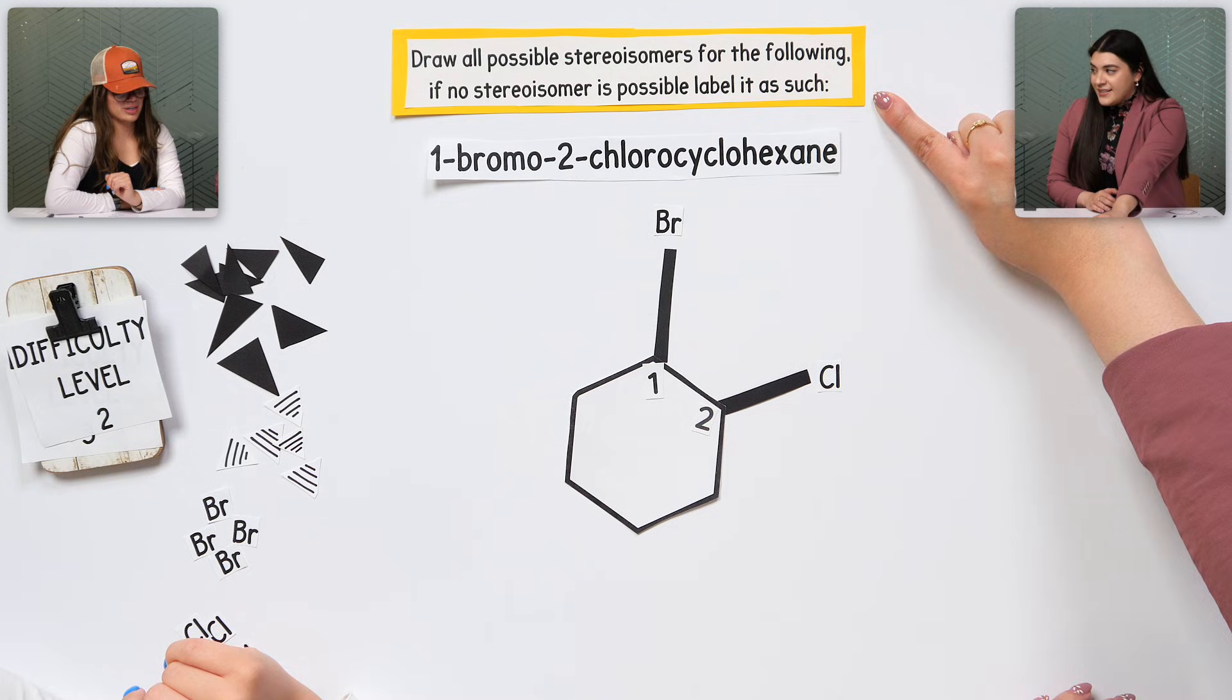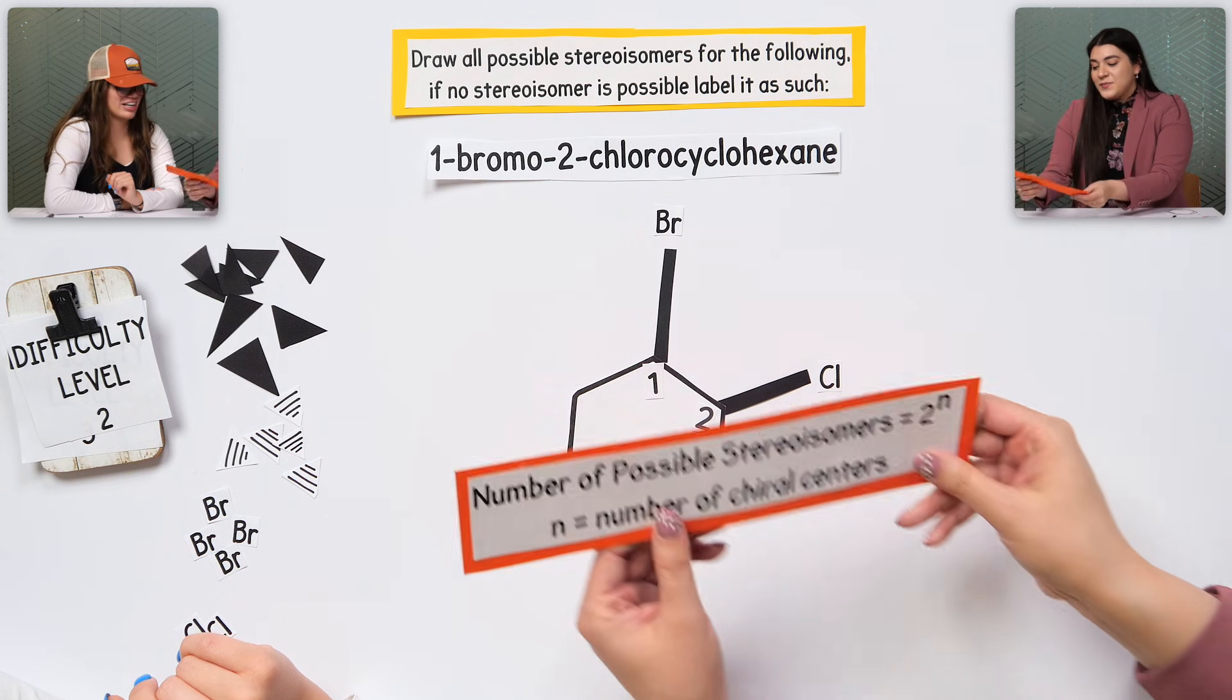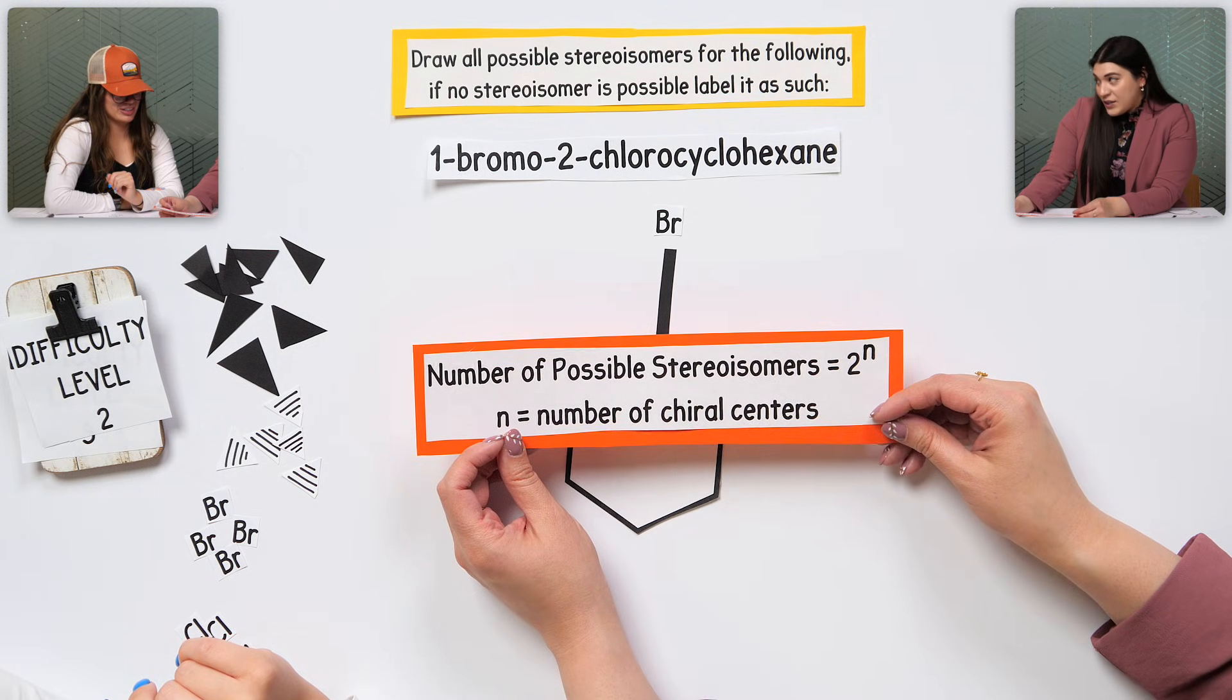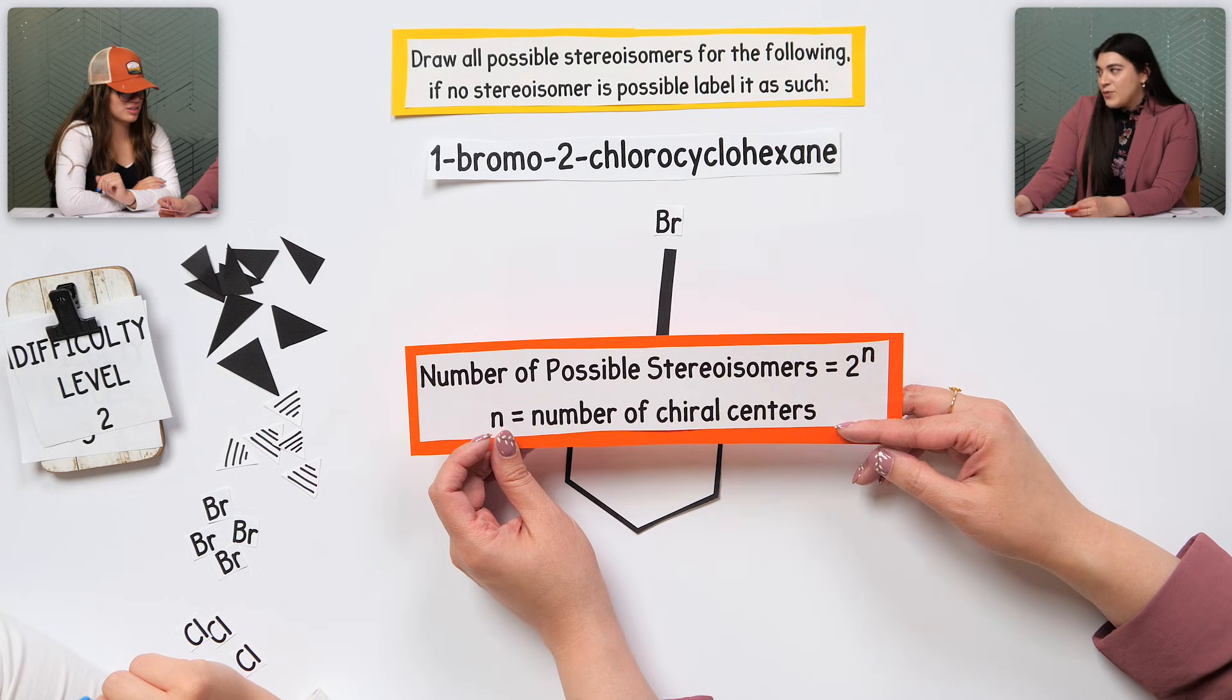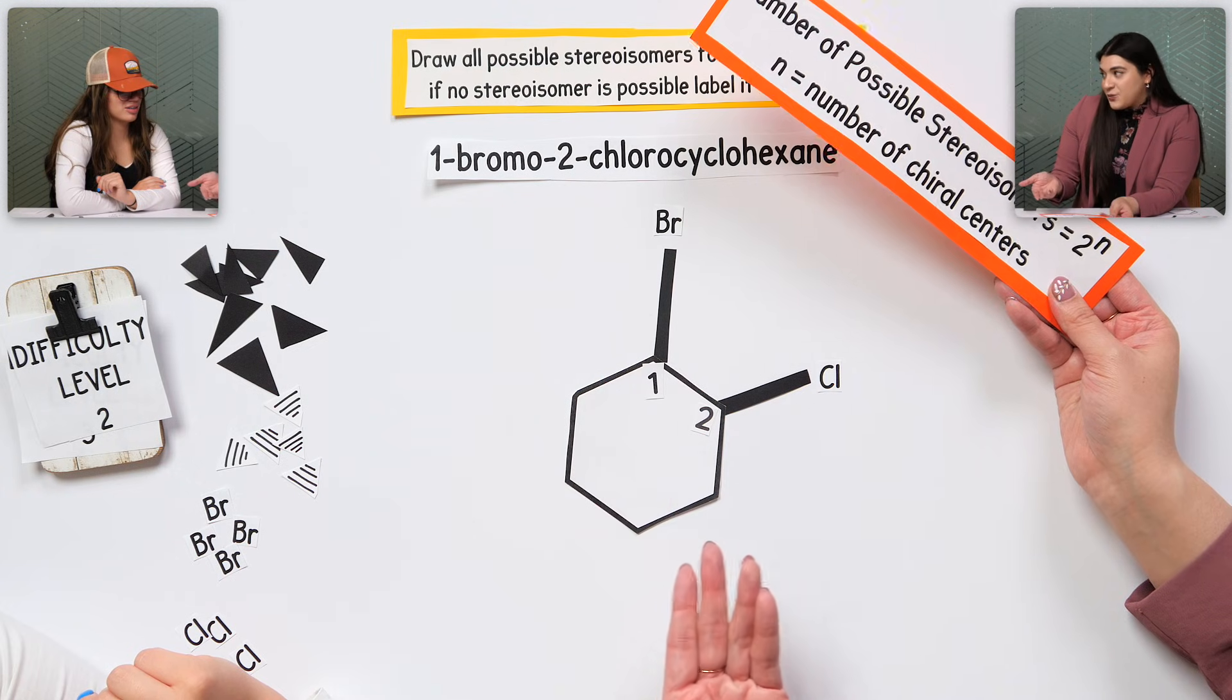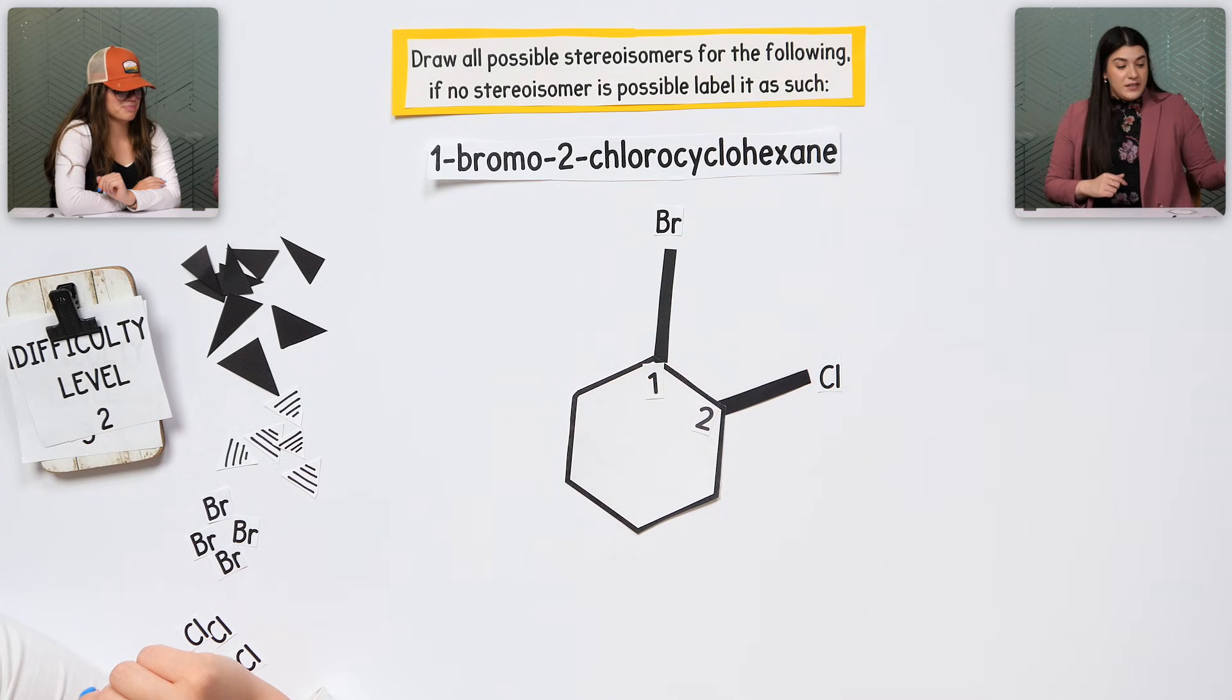Now, we've built what this is. What's the question asking? Draw all the possible stereoisomers. How do we know how many are possible? This is going to go back to chirality, specifically chiral centers. There's a little formula here where the number of possible stereoisomers is two raised to the nth power, n just means the number of chiral centers.